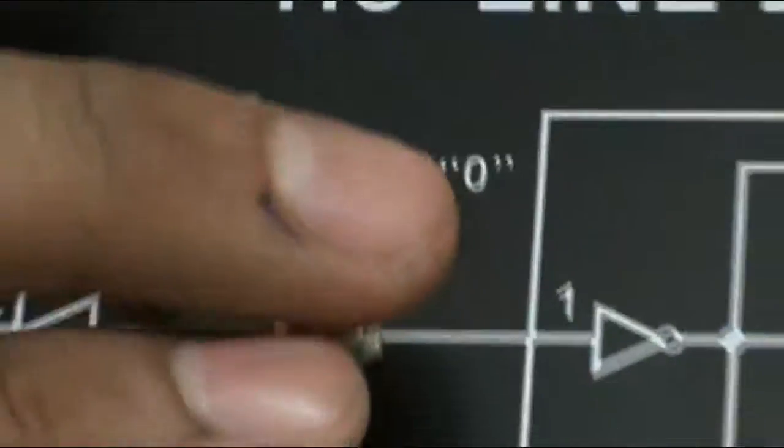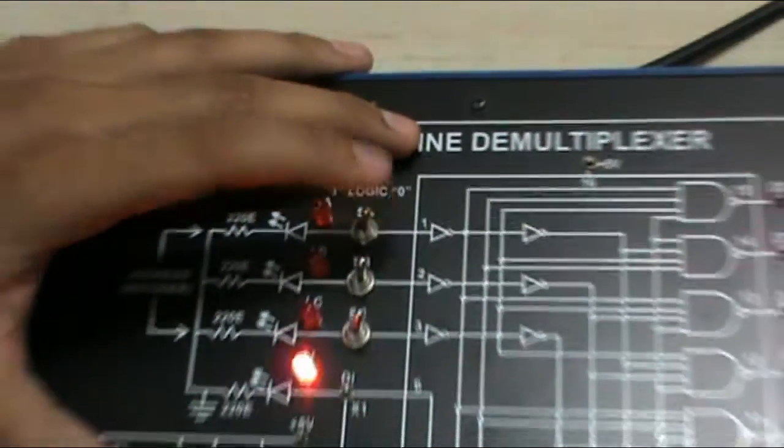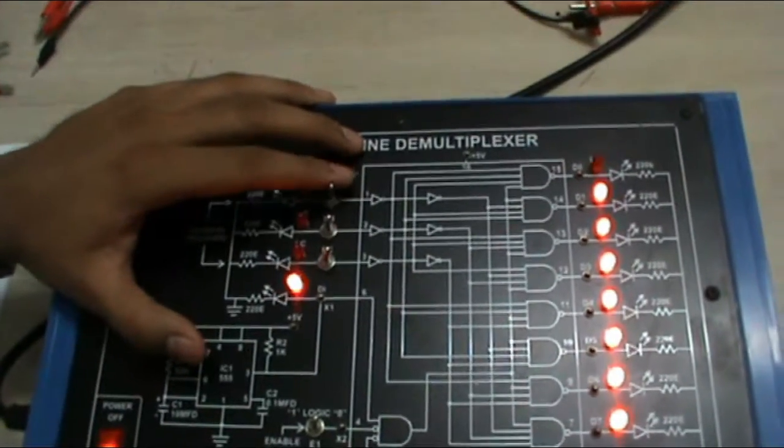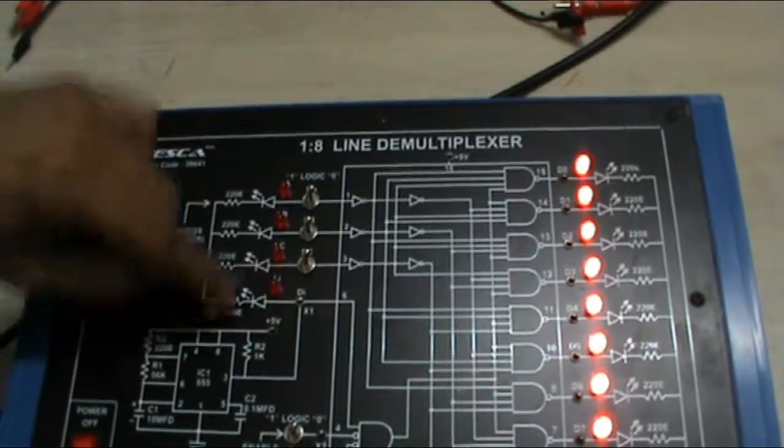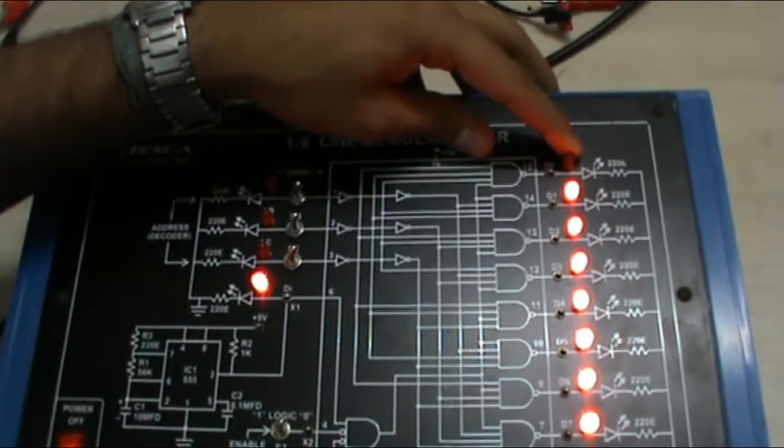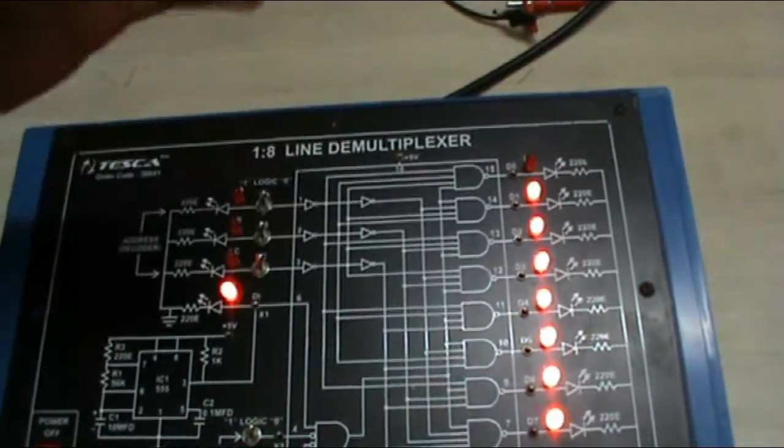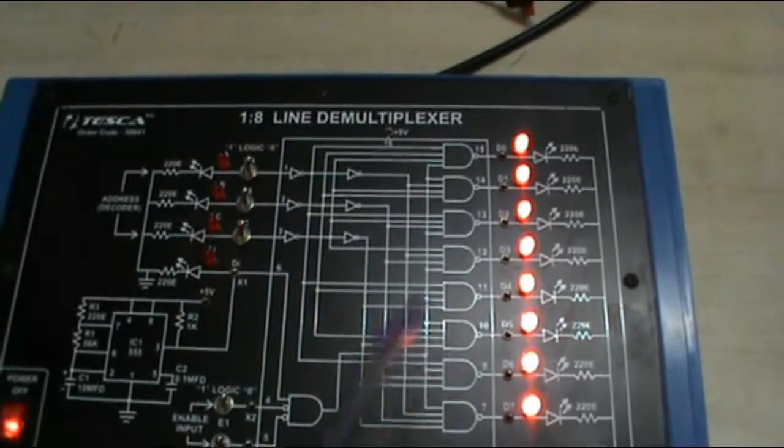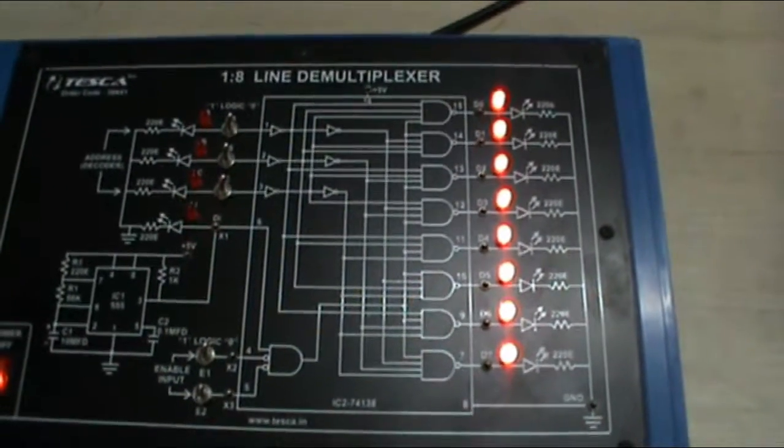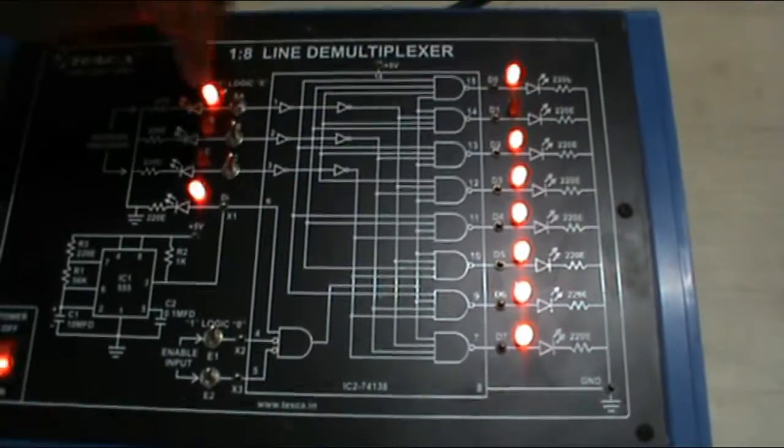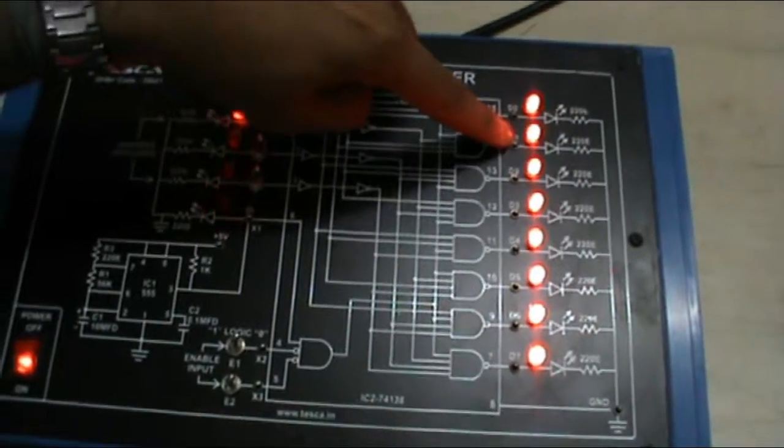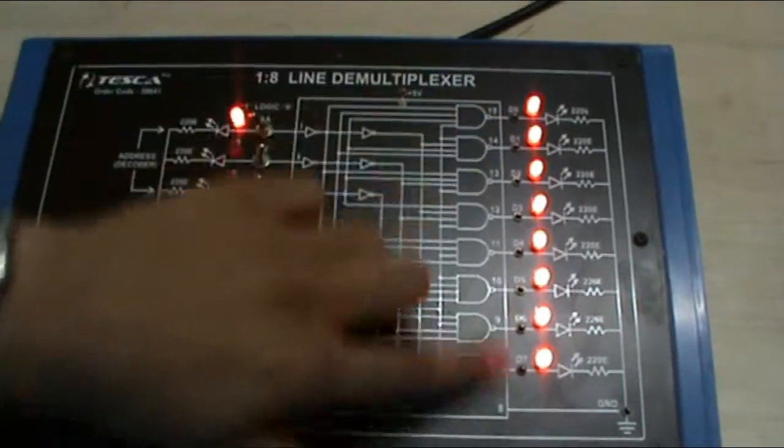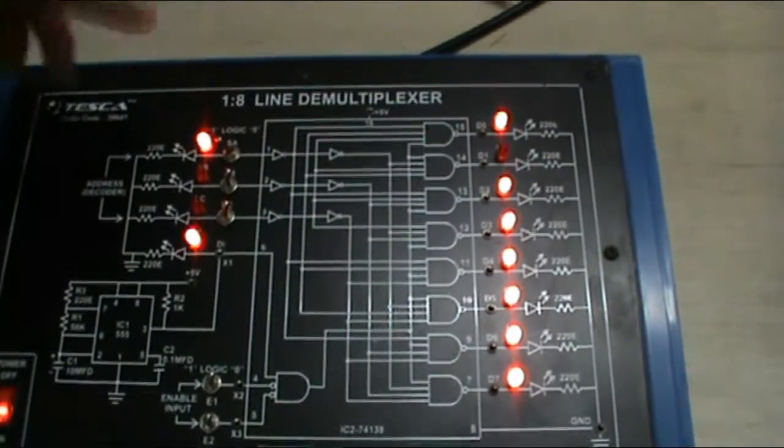According to this, when all the switches are logic 0, it is giving 0 as the input. So L0 LED will glow, will blink. Rest all the LEDs will be at on position. If we get 1 as input then L1 is blinking and all the other LEDs will be at on position.